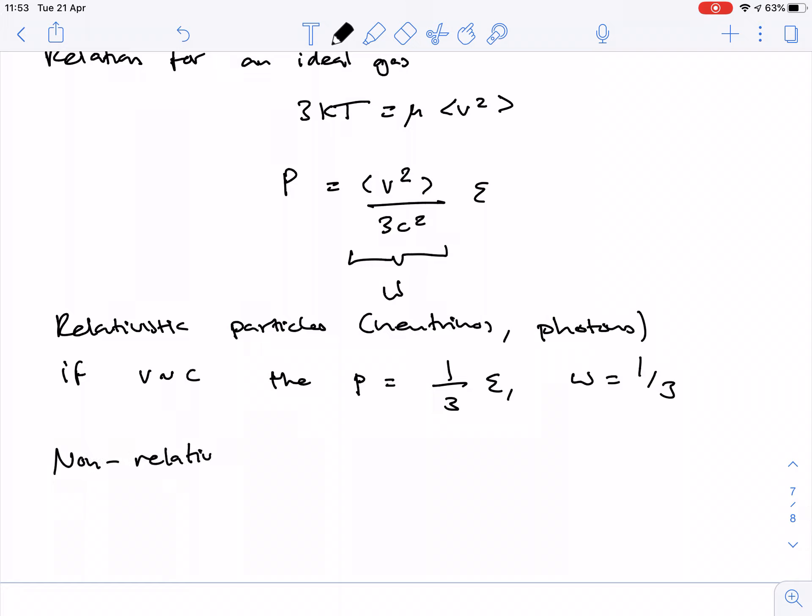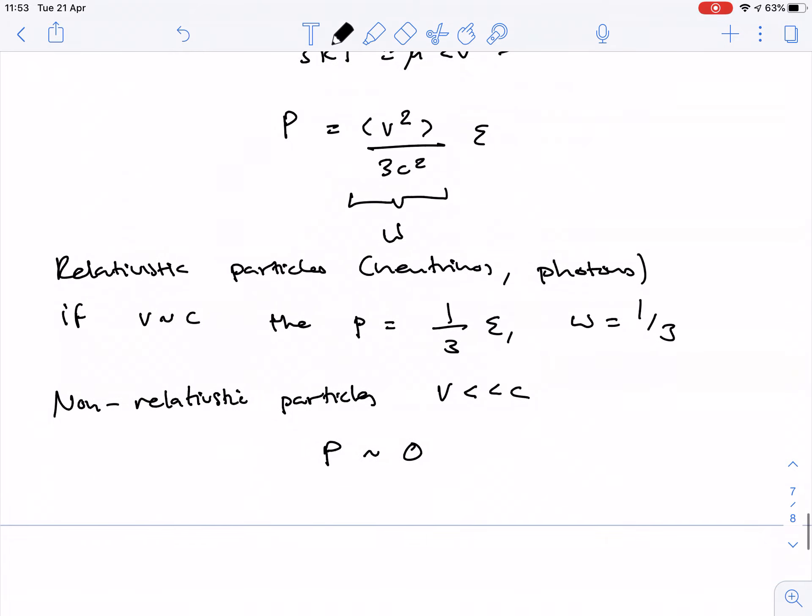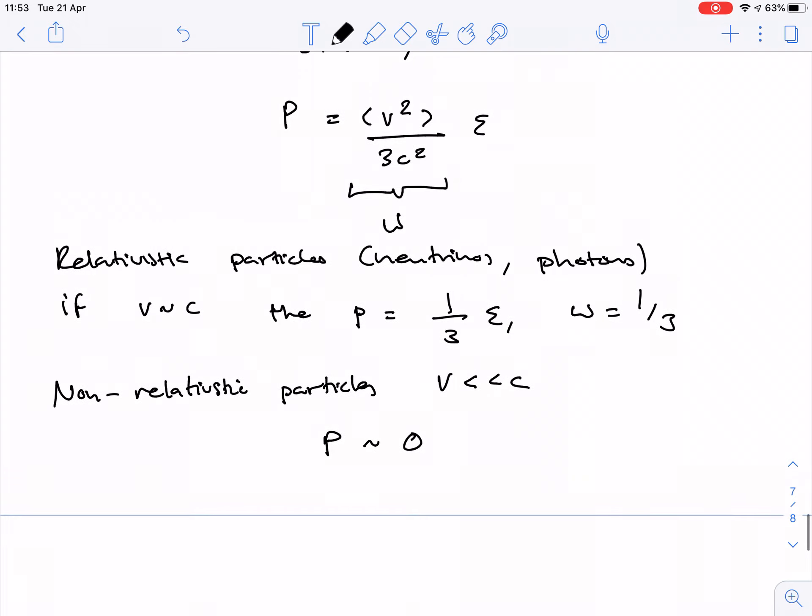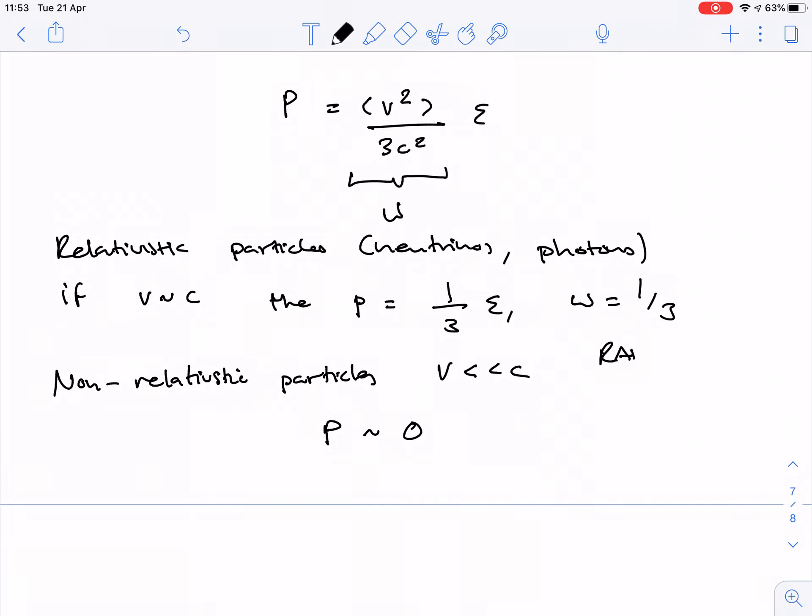What about non-relativistic particles? Well, here, v is much, much less than c, so p equals zero. Basically, v over c is almost zero. And they're the two obvious things you see. We will talk about this as being radiation, or a radiation-dominated universe. And we will talk about this one as being matter, or a matter-dominated universe.